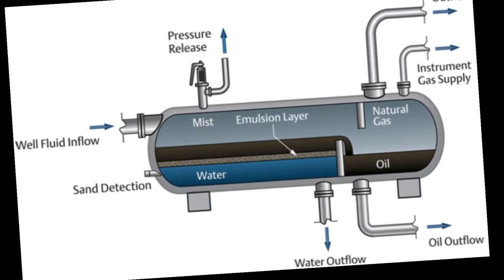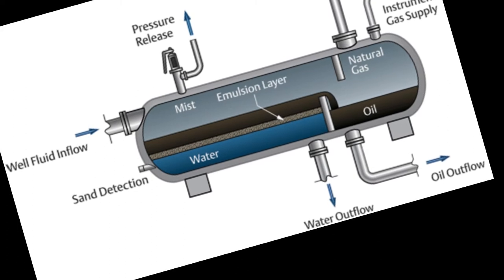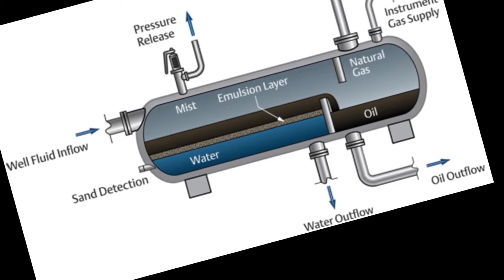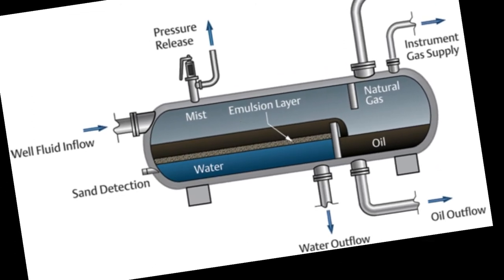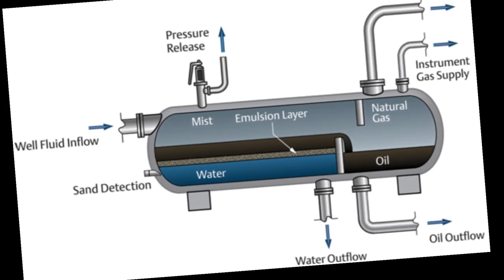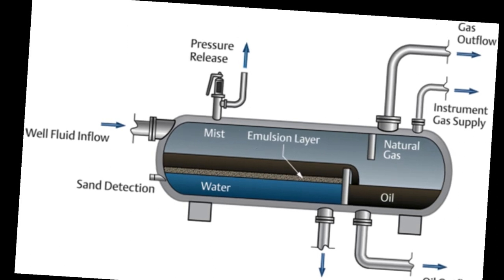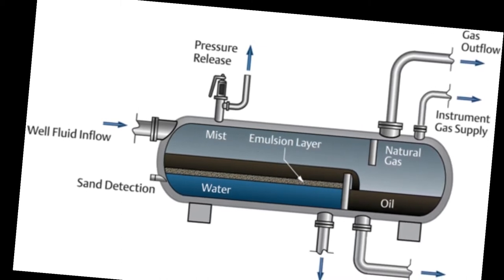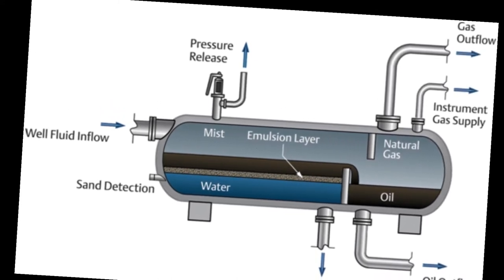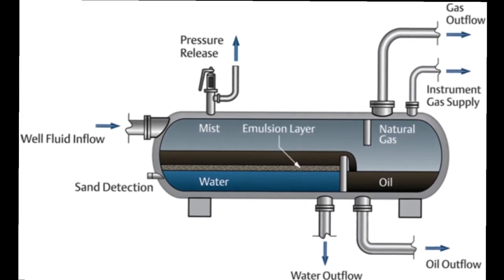Whenever the well stream comes out from the well — which is the produced fluid, a mixture of hydrocarbon and other impurities — it contains a large quantity of dissolved natural gas. It is very important to separate this dissolved natural gas from the well stream. The first important reason is that it is very difficult to transport live crude. Live crude is the crude which has dissolved natural gas. So for storage and transportation purposes, we must remove this dissolved gas from the crude, which is called live crude, and turn it into dead crude.